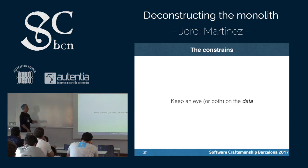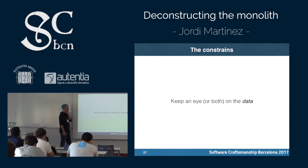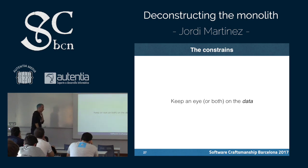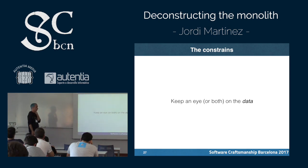This is tricky because it is not easy to keep your data consistent when you are changing your architecture, since you are decoupling probably your persistence layer. And since the data is real, you need to guarantee consistency.